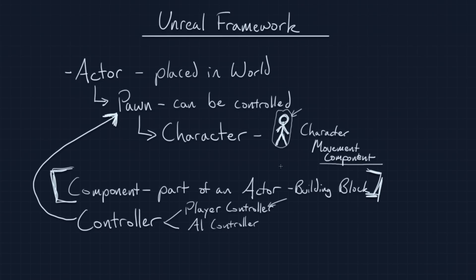It is important to know that we can get data from the Player Controller. For example, the Player Controller is going to be aware of all of the rotations being sent down to our Pawn. Later on, we are going to ask our controller what the rotation of our character is so that we know which way it is facing. It is important for you to hear about it because then you will have a little bit of the information stuck in your head, and hopefully you are taking notes.